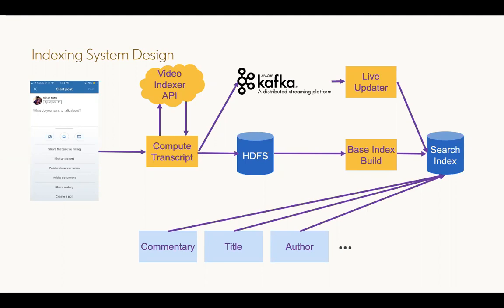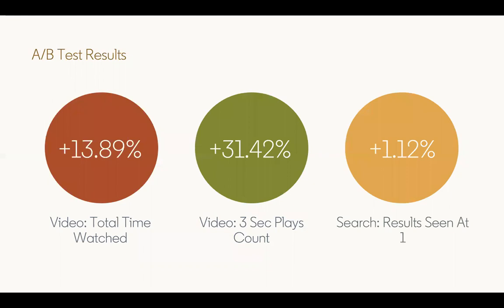In terms of metric impact on the content search page, we see increases in time watched for videos and three-second plays. Results seen at one is a recall metric which shows results being displayed that weren't there before. There is a trade-off to retrieving more content as precision can be harmed, so we've also ramped a trained search model to improve the precision of updates shown.